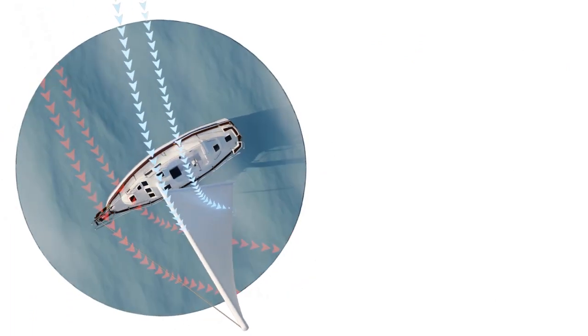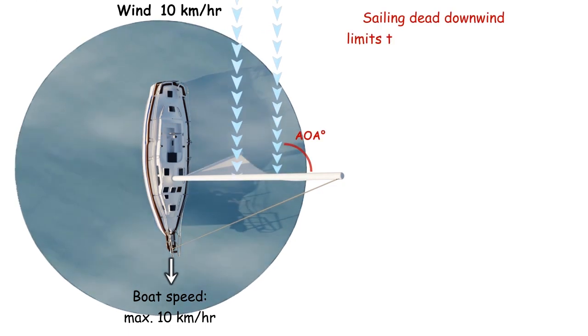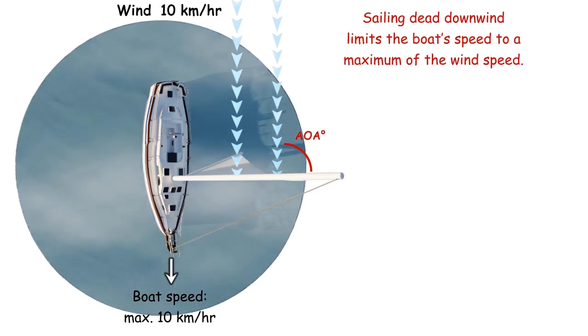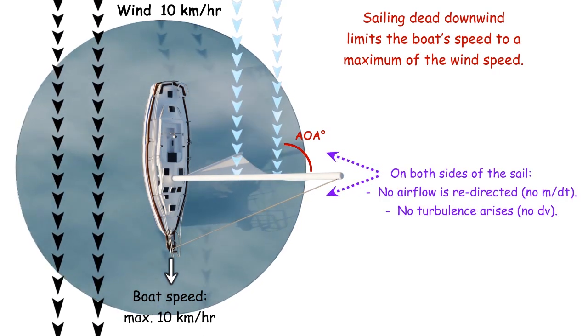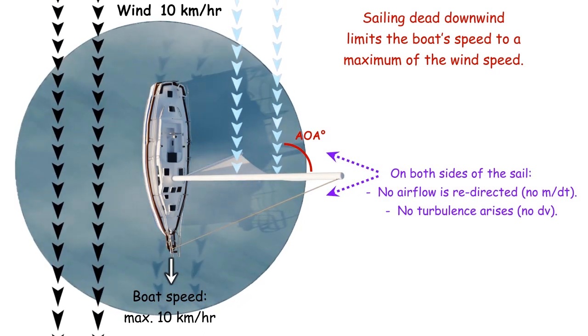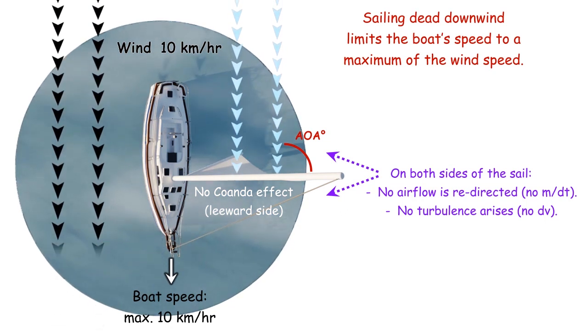In contrast, when the boat is running with the wind, the sail has a wide angle of attack, and the dynamics are reversed. The sails do not redirect any airflow, and no airflow is slowed down. In particular, there is no Coanda effect on the leeward side of the sail.